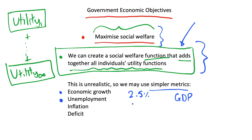We can also have an unemployment target — we want to keep unemployment as low as possible, and we may have a target such as unemployment below 5%. This can vary between governments and there's often not a fixed unemployment target; we just tend to want low and stable unemployment.